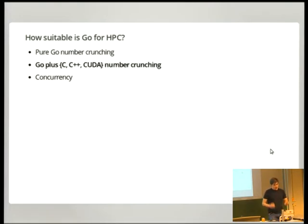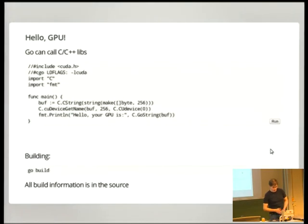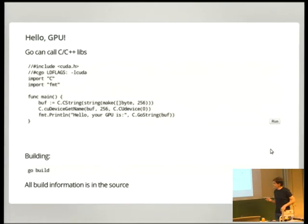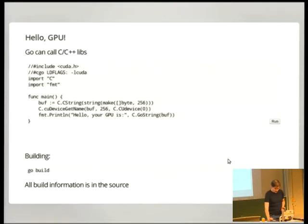How about calling some external library from Go, whether it's standard C stuff or CUDA to offload your number crunching to the GPU? You can do that, and it's not that hard in Go. You need some special comments to include your C headers and linker flags right in the source code, so there's no special build system. Here's an example where I'm calling a CUDA library to ask for the name of my GPU.